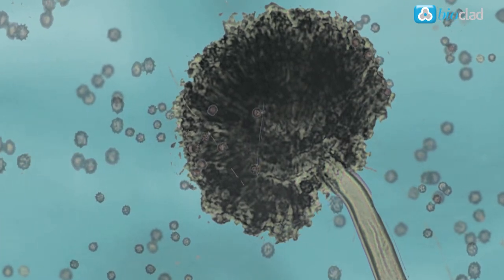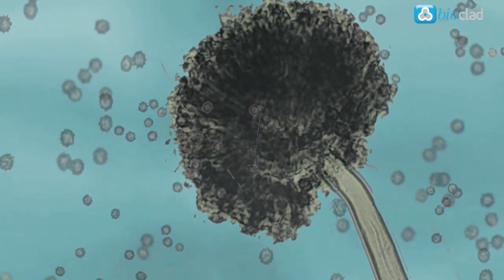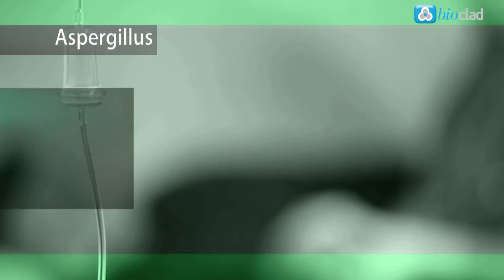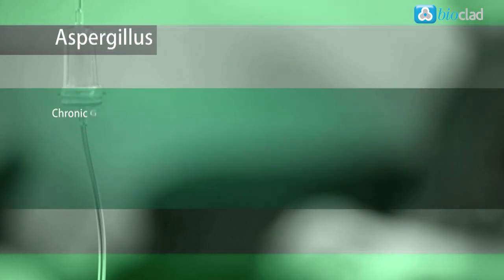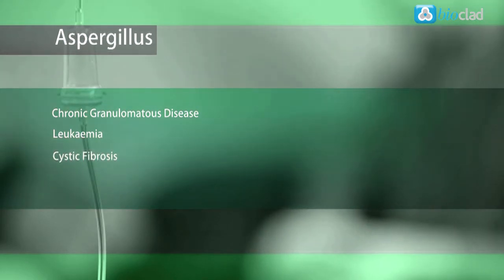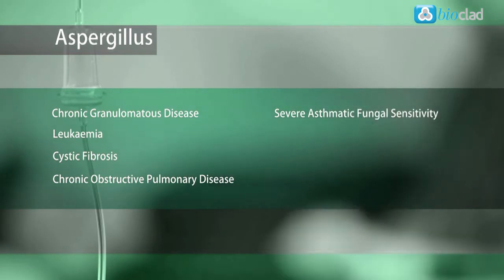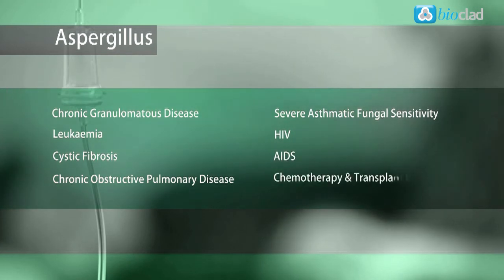Exposure to aspergillus can lead to a group of diseases collectively known as aspergillosis. This can affect patients whose immune system may be compromised such as those with chronic granulomatous disease, leukemia, cystic fibrosis, chronic obstructive pulmonary disease, severe asthmatic fungal sensitivity, HIV, AIDS and chemotherapy and transplant patients.